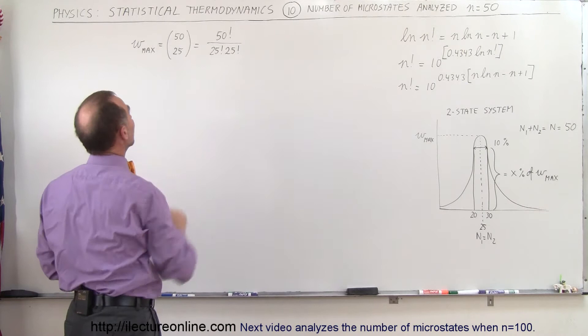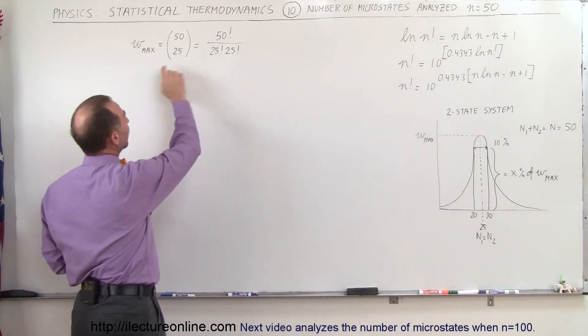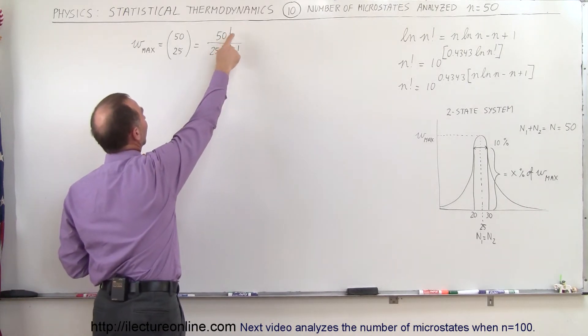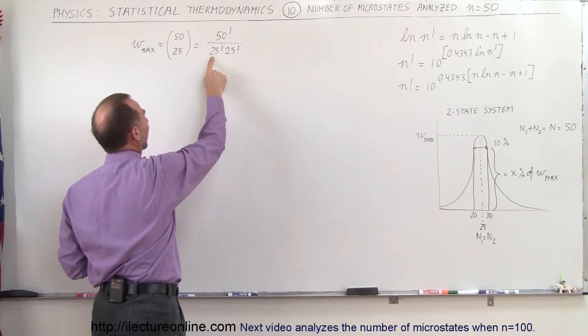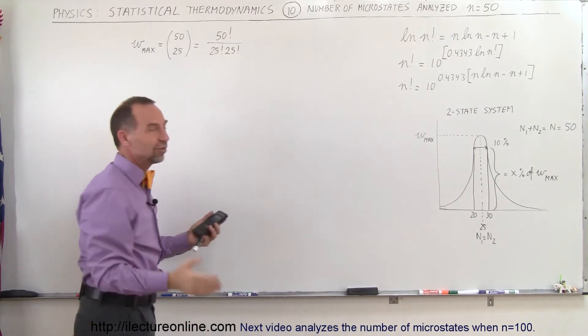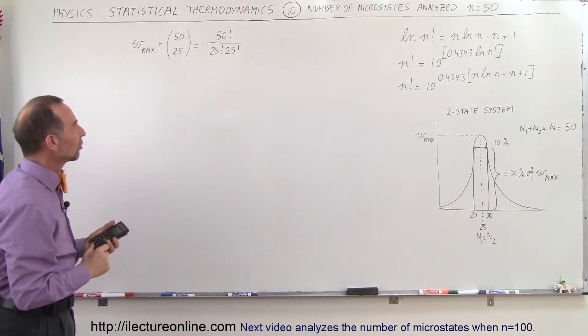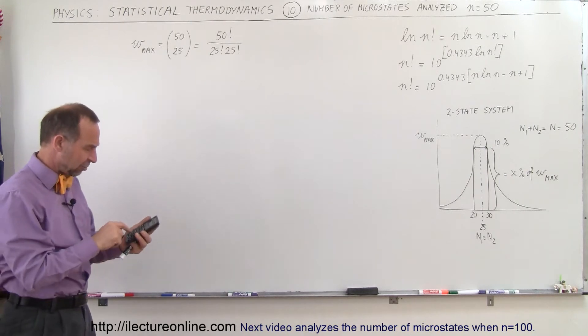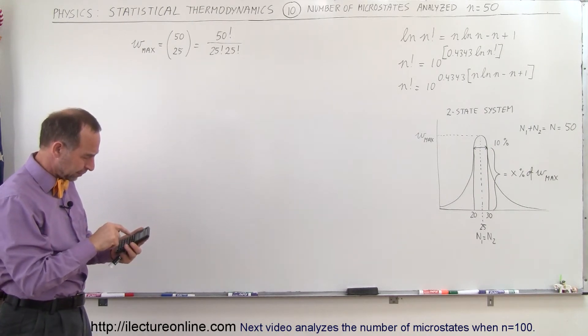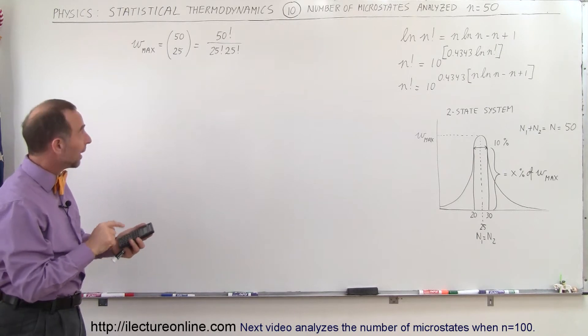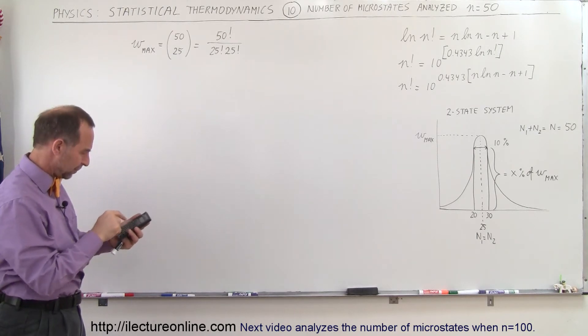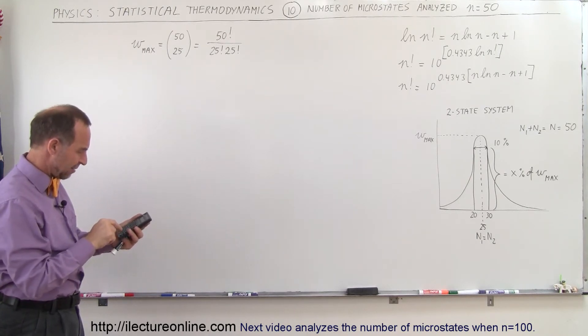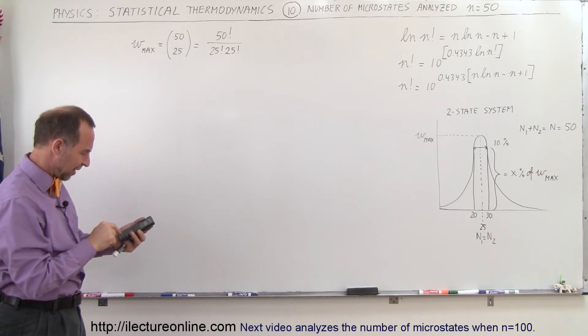Let's find out what the max number of microstates is, which can be found by taking the number of n factorial divided by half of that, n1 and n2 factorial, which in this case n1 and n2 are equal to each other, summing up to 50. So let's try 50 factorial and divide that by 25 factorial and divide that by 25 factorial.